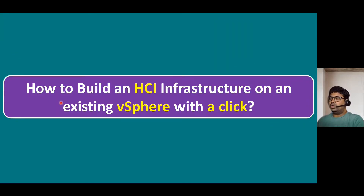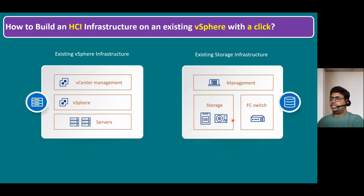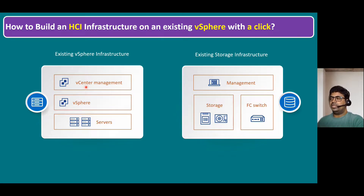Now let's talk about how to build an HCI infrastructure on an existing vSphere with a click. In our existing vSphere infrastructure, we require physical servers — for example, HPE DL380 servers. On top of the physical servers, we install the ESXi operating system, also called vSphere. To manage multiple ESXi hosts, we use a vCenter Server — that is our existing vSphere infrastructure.